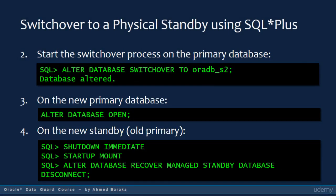The second step is to start the switchover process on the primary database using the ALTER DATABASE SWITCHOVER statement. After this statement finishes, open the new primary database for read-write. In the fourth step, mount the new standby database and start the apply process.